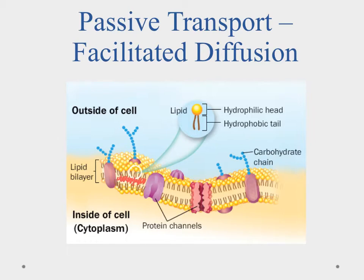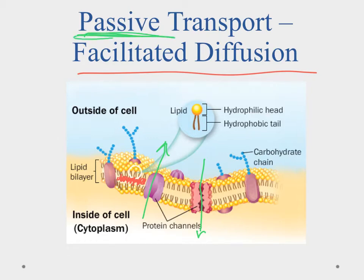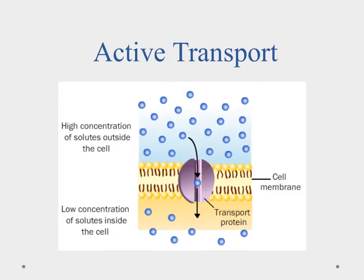But what if those molecules can't move through the cell membrane on their own? The cell membrane forms a barrier that not everything can cross. That's when we talk about facilitated diffusion, which uses protein channels to allow things to move into or out of the cell. It's still passive — still happening by diffusion — but the protein channels allow larger molecules to pass through.